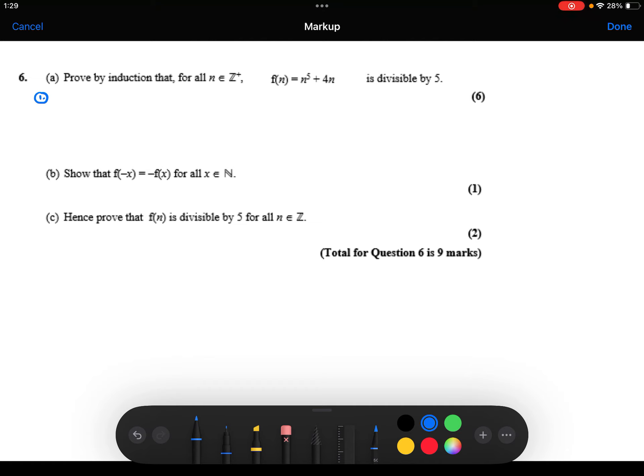Step 1, we're going to prove that f of 1 is divisible by 5. So 1 to the power 5 plus 4 times 1 is 1 plus 4, which is 5, which when divided by 5 gives 1. Therefore, true for n equals 1.